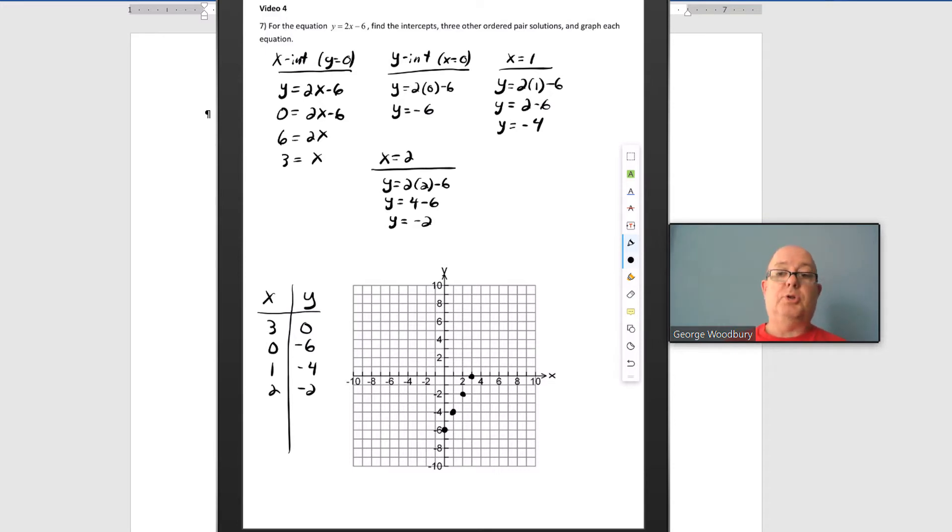We could do one below zero, we could do one greater than 3. Let's try a little out there, let's try x equals 5. No right way to do these, we're just picking points, looking to try to find the pattern. y equals 2 times 5 minus 6, that's 10 minus 6, or 4. So our last ordered pair is 5 comma 4. 5 to the right, up 4.